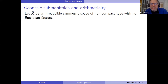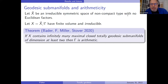The theorem I want to talk about today: we have X an irreducible symmetric space of non-compact type, and we look at a finite volume locally symmetric space. The theorem we proved around 2020 says that if you contain infinitely many maximal closed totally geodesic submanifolds of dimension at least two, then gamma is arithmetic. This points out that things are even more restrictive — you can't be generic, and in fact you can't even be non-arithmetic, which is a stronger condition.